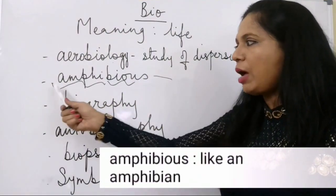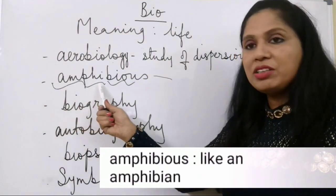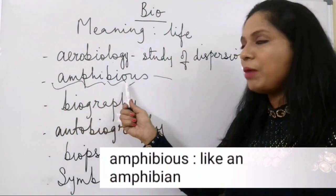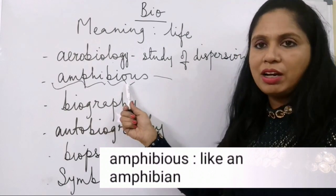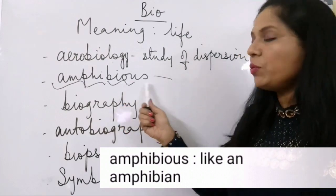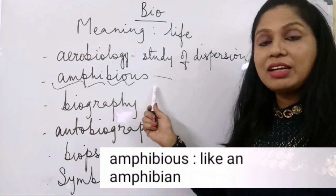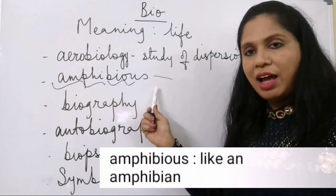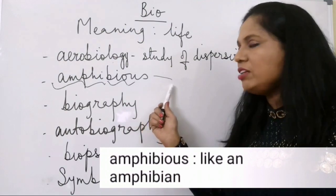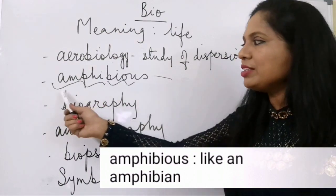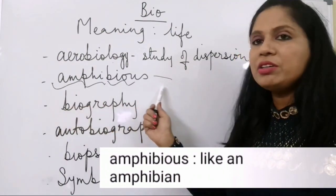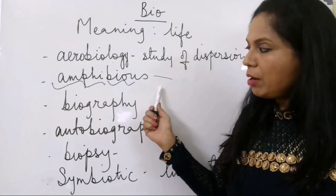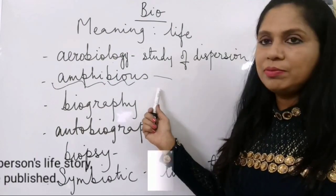Amphibious — amphi means two and bio means life. A creature that can live in both land and water is known as an amphibious creature or an amphibian.